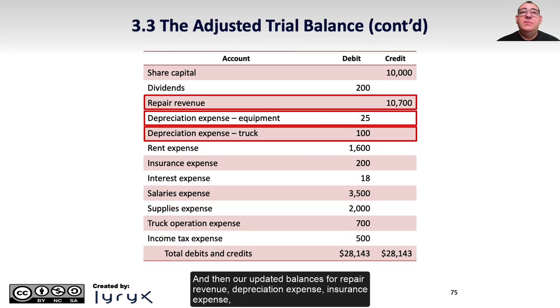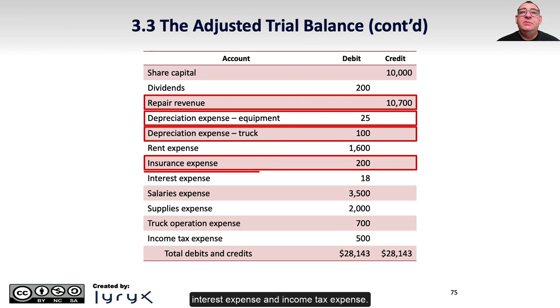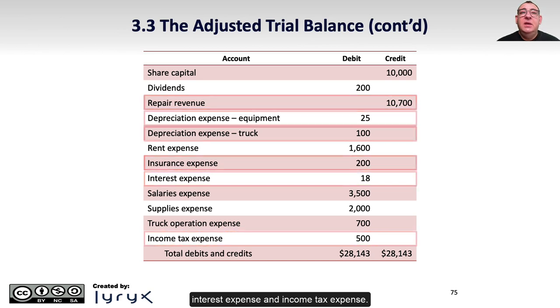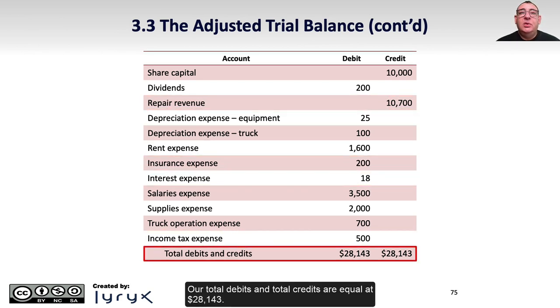And then our updated balances for repair revenue, depreciation expense, insurance expense, interest expense, and income tax expense. Our total debits and total credits are equal at $28,143.